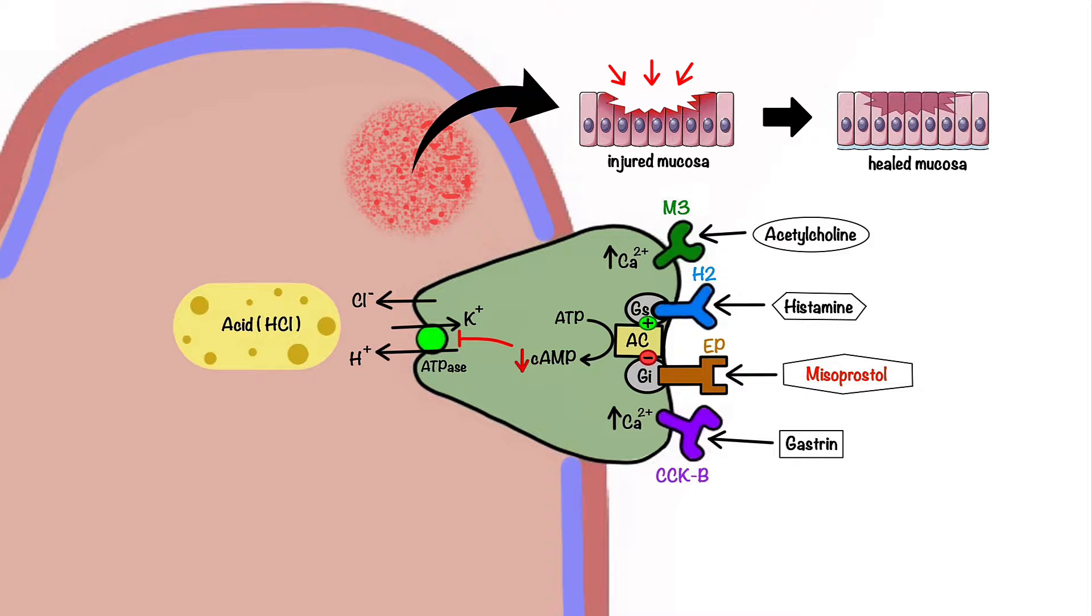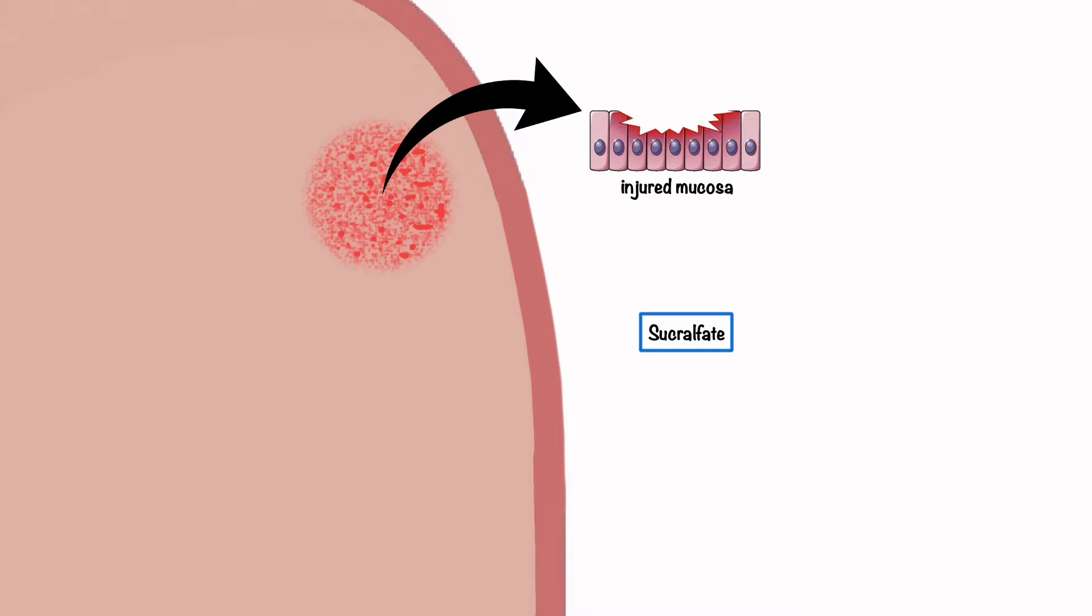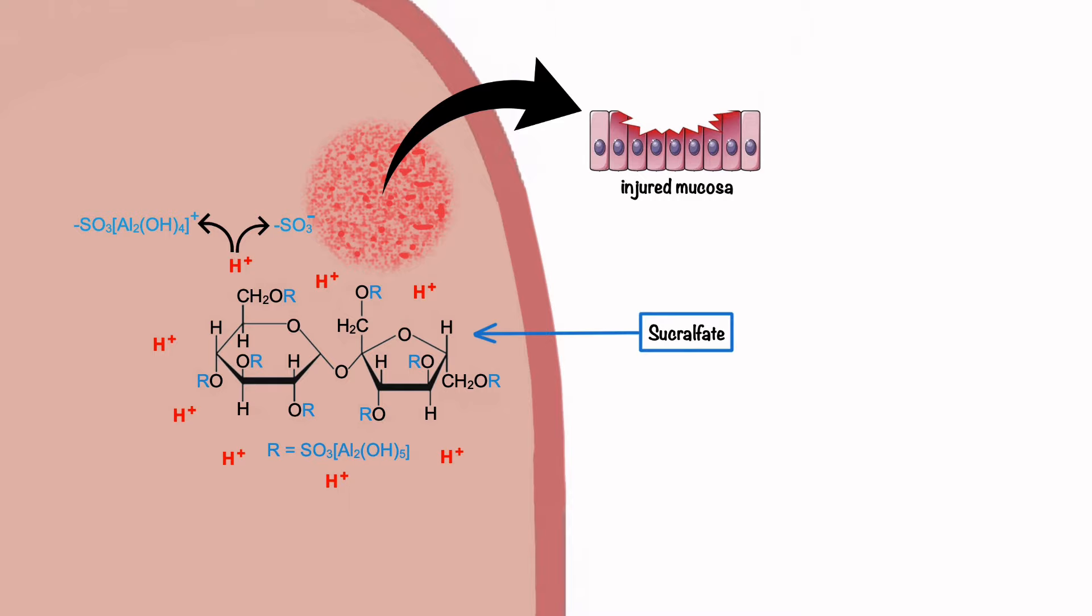Sucralfate, on the other hand, is a complex of aluminum hydroxide and sulfated sucrose molecules, which in the acidic environment of the stomach breaks down into strongly negatively charged sucrose sulfate and aluminum salt.